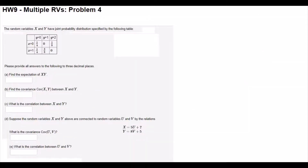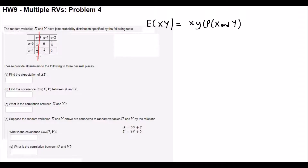Problem number 4. The random variables x and y have joint probability distribution specified by the following table. We are going to find the expectation of xy. Expectation of x and y is x value times y value times their probability. We can follow it from the table. For the first cell, 0 will cancel everything so we can cancel the column and row where x or y is 0. We are left with only the cell where x=1, y=1, which has probability 3/8. And 1 times 3/8 is the expectation of x and y.